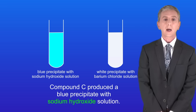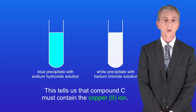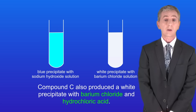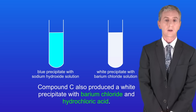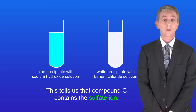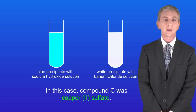Compound C produced a blue precipitate with sodium hydroxide solution, which tells us that compound C must contain the copper ion. Compound C also produced a white precipitate with barium chloride and hydrochloric acid, which tells us that compound C contains the sulfate ion. So compound C was copper sulfate.